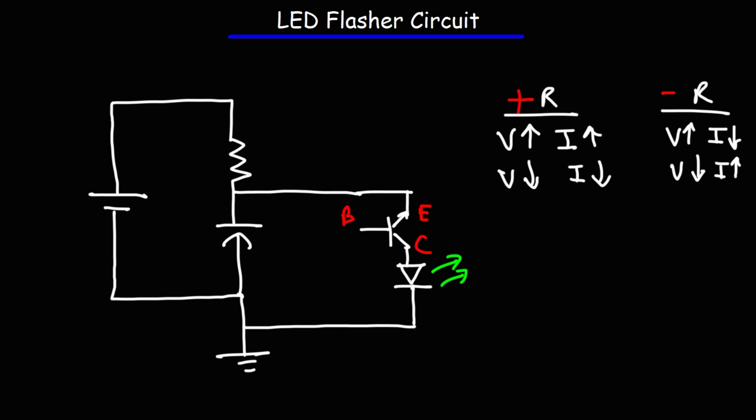Now, with the NPN transistor connected in this way, this is what happens eventually once you reach a breakdown voltage. The voltage will decrease as the current increases. So that this circuit works when operating in the negative resistance region.